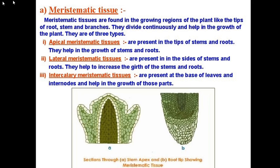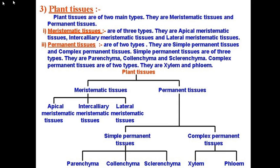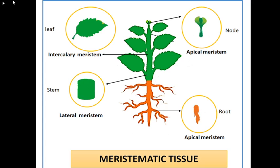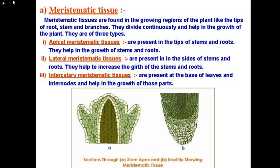In this third session we will complete simple permanent tissues, but before that we will revise the meristematic tissues we learned previously. Due to a technical problem I am not able to show the slides. So these are the meristematic tissues, which are present in apical, intercalary, and lateral positions. You can take a screenshot and complete your short notes.